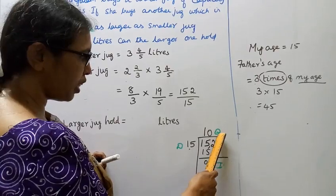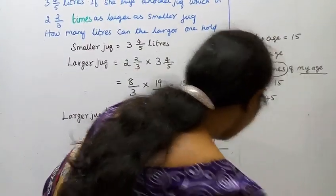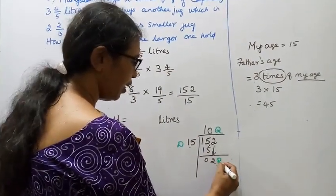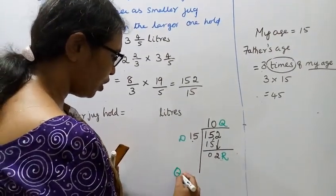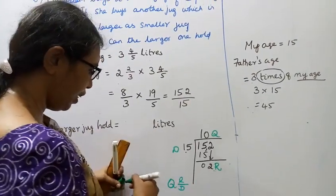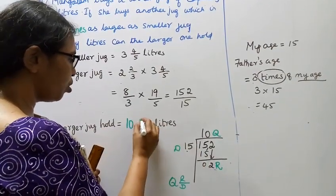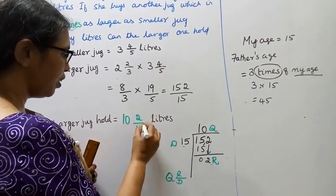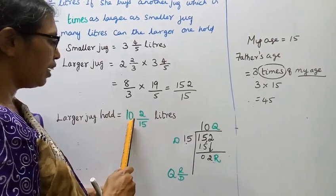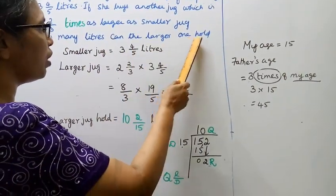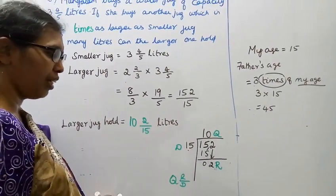After dividing 19 by 15, the quotient is 10 and the remainder is either... the quotient is the answer. Quotient plus remainder by divisor gives us 10 remainder 2, so 10 2/15 liters. The larger jug holds 10 2/15 liters.